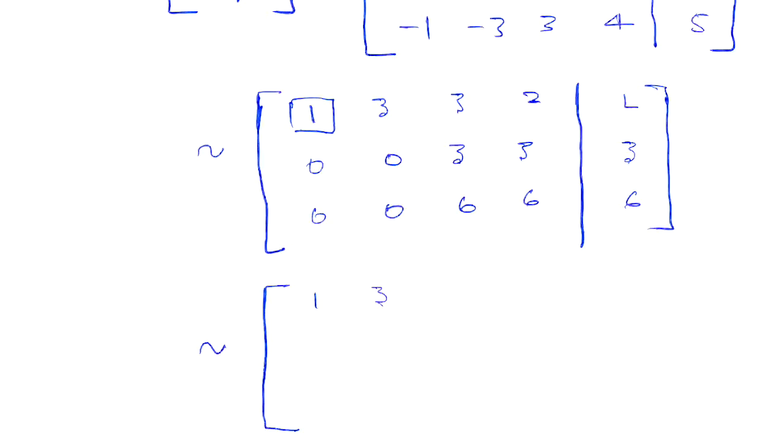And we can see that in the second row, we also got a pivot in the third column. And if we apply row elimination one more time, we see that the last row becomes zero. And this is the echelon form of the matrix.